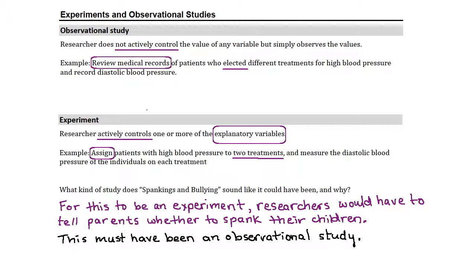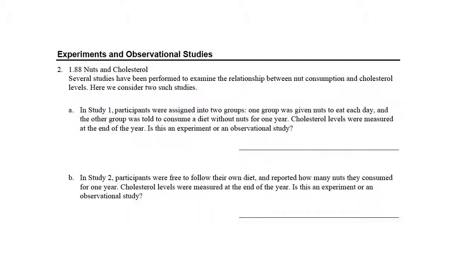Sometimes we're given great detail about how a study was conducted, and other times we have to think about how it would be conducted as an observational study versus an experiment and decide which sounds more plausible. We also want to be able to read a more detailed description of a study and determine whether it's an experiment or an observational study.